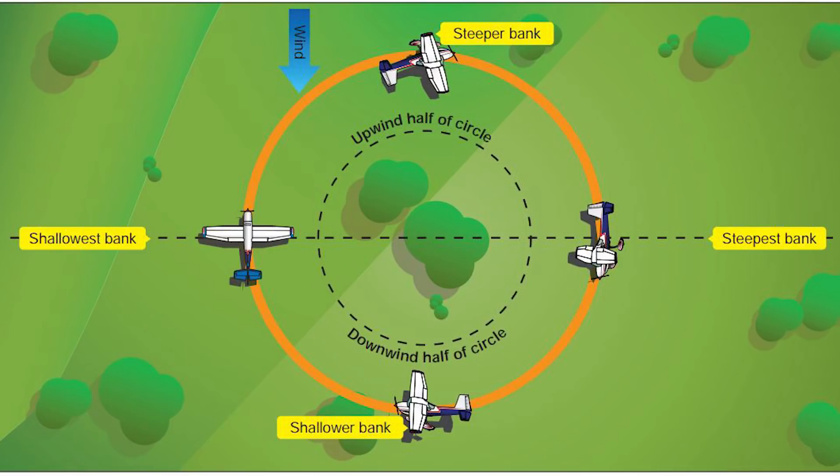So first, let's go ahead and define what a turn about a point is. It's simply a maneuver where you're flying relatively low to the ground and you're making a circle around a defined point. The purpose of this maneuver is to practice changing your bank angle, or changing your rate of turn, to accommodate the wind.